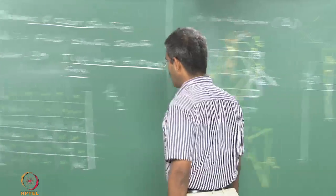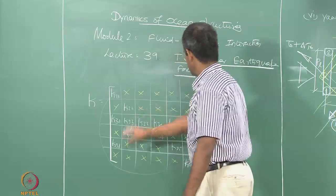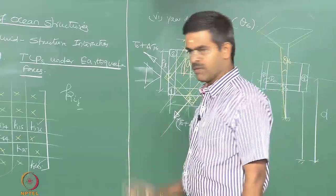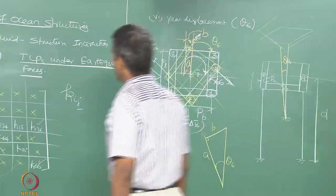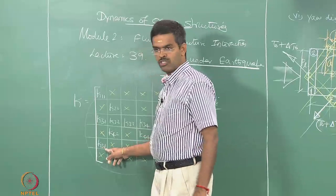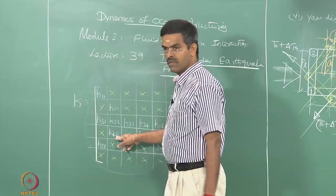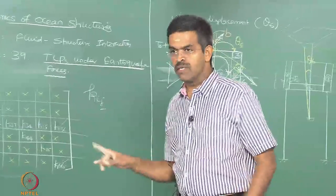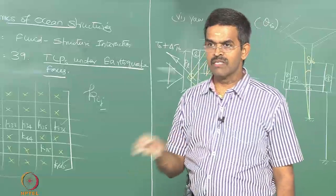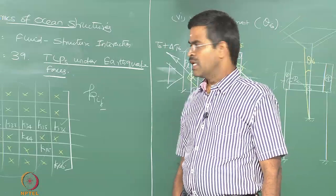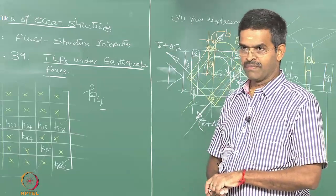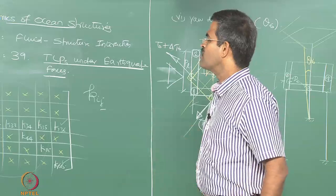Looking at the off-diagonal (half-diagonal) terms beyond the band: they reflect strong coupling between various degrees of freedom. For example, pitch and surge are coupled; roll and sway are coupled. These half-diagonal terms tell you the influence of coupling. Heave, however, is coupled with all degrees of freedom. Other combinations of degrees of freedom also show coupling via the half-diagonal terms.